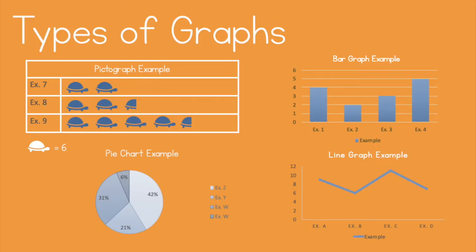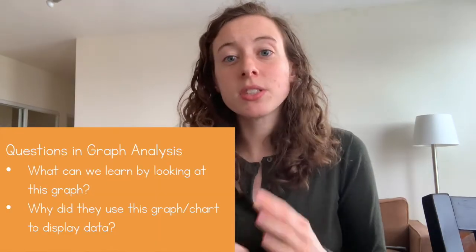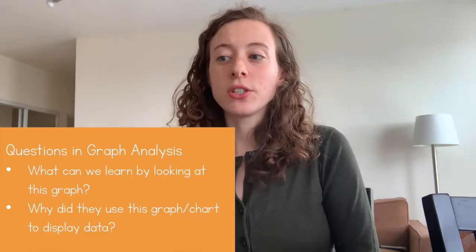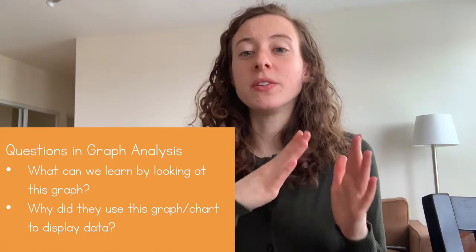Here are just some quick examples of these four types of graphs. When we are doing a graph analysis — looking at a graph and trying to understand it and get more information from it — there are a couple of questions we want to ask ourselves. The first is: what can we learn by looking at this graph? What information is on the graph, from the titles and labels to the actual data itself? The second question is: why did they use this particular graph or chart to display the data versus another one, and how can that help us learn more?